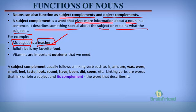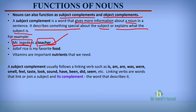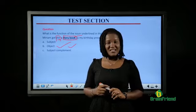Now let's go to our test section. The question says: What is the function of the noun underlined in the sentence? Miriam got me a storybook as my birthday present. What is the function of the noun storybook? Is it A, subject; B, object; or C, subject complement? The correct answer is B, object. Miriam got me a storybook — what did Miriam get me? A storybook. Storybook is the direct object, while me is the indirect object. If you picked B, you are correct. Thanks for watching and see you next time.